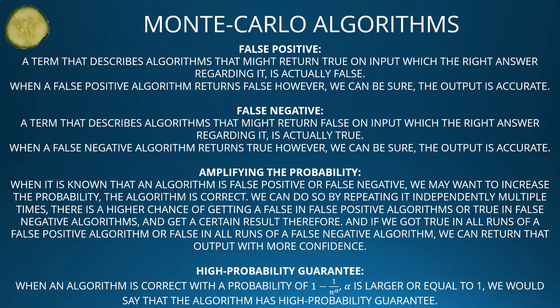High probability guarantee: when an algorithm is correct with a probability of 1 minus 1 divided by n to the power of some alpha, and alpha is greater than or equal to 1, we say that the algorithm has a high probability guarantee.